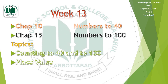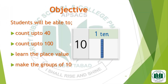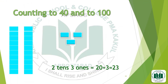Now we will go to start our week 13 assignment, in which we will discuss chapter number 10 — Numbers to 40 — and chapter number 15 — Numbers to 100. The topics are counting to 40 and to 100, and place value. Objectives: students will be able to count up to 40, count up to 100, learn place value, and make groups of 10.